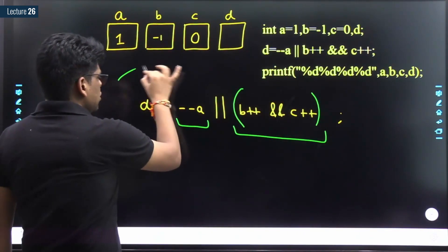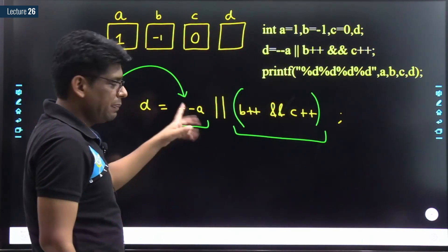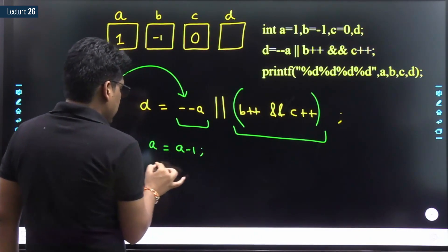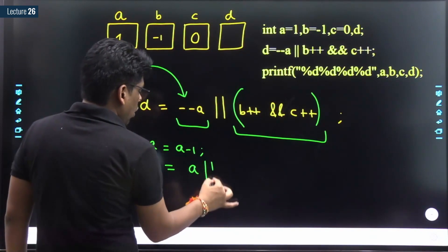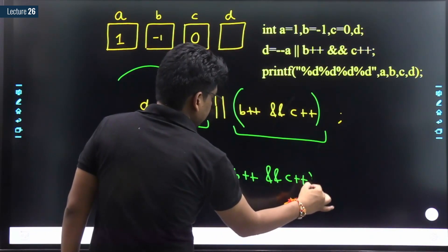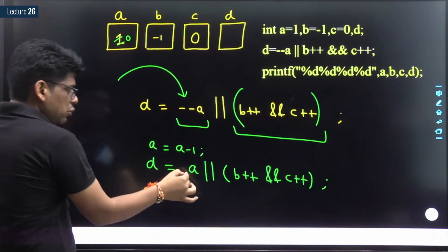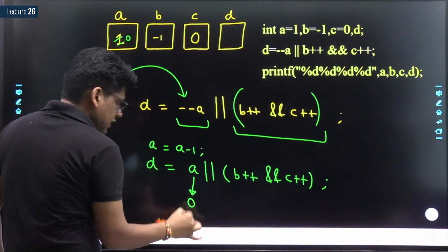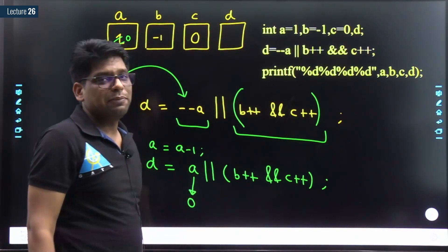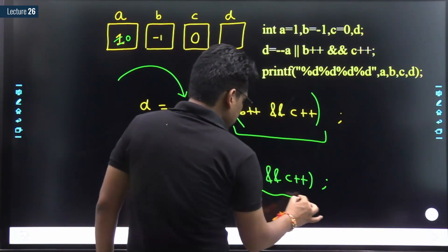Since the first operand of OR is 0, the compiler will go to the second operand. Now we evaluate b++ AND c++. Both are post-increments, so use the current values first, then increment. The value of b is minus 1, which is non-zero, so compiler goes to c. The value of c is 0. Non-zero AND 0 gives 0. So the result of the AND expression is 0, and after evaluation, b and c will be incremented.